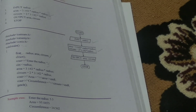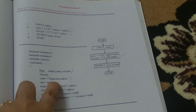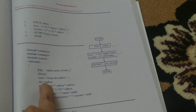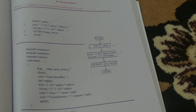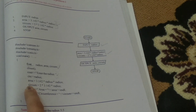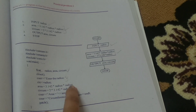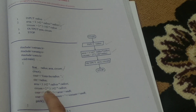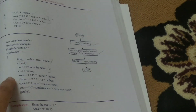Here you can see the output. The first line prints "enter the radius" from the cout statement. Then cin waits for input — here the radius entered is 5.5. Area is calculated as 3.14 into 5.5 into 5.5, giving 95.045. Circumference is calculated as 2 into 3.14 into 5.5, giving 34.56. These values are stored in area and circumference respectively.